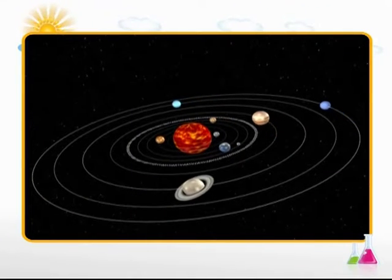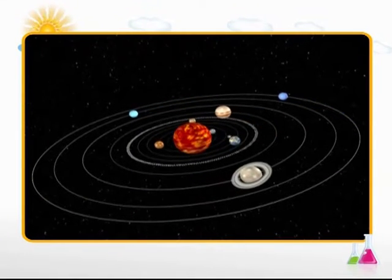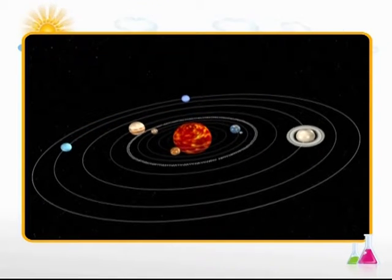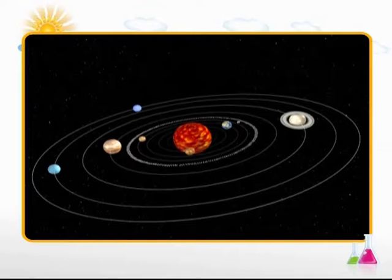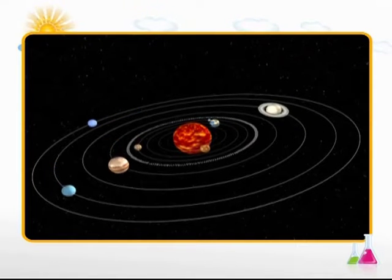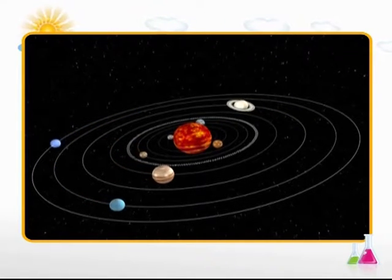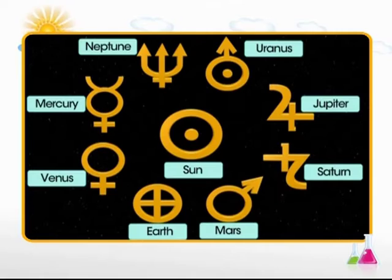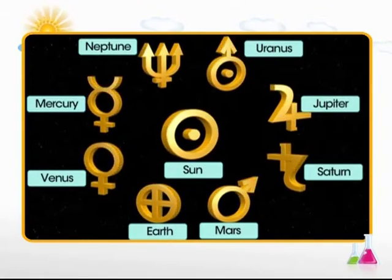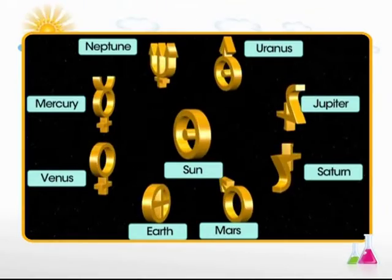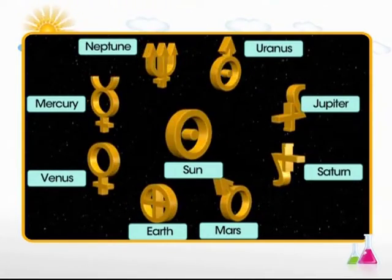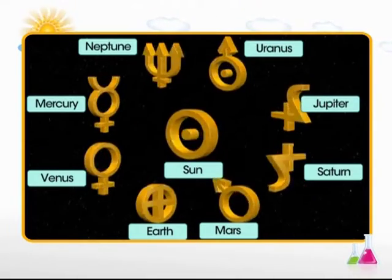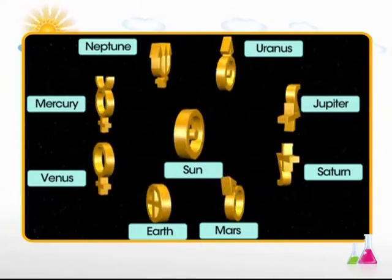The solar system means the family of the sun. The sun, eight planets, satellites of the planets and some other celestial bodies known as asteroids, meteorites and comets form the solar system. The names and symbols of most of the planets and sun are very ancient. Even now, astronomers use these symbols. Shown here is the list of names and their symbols.